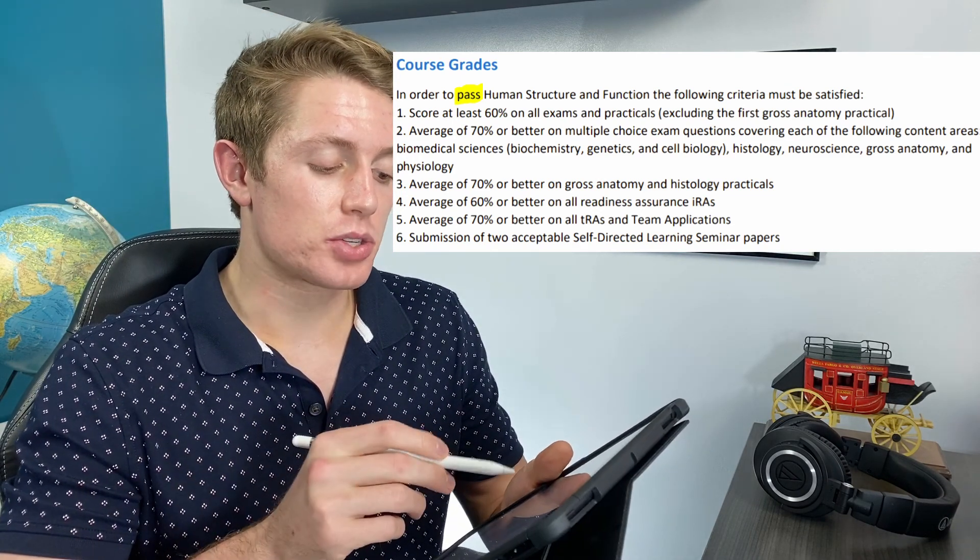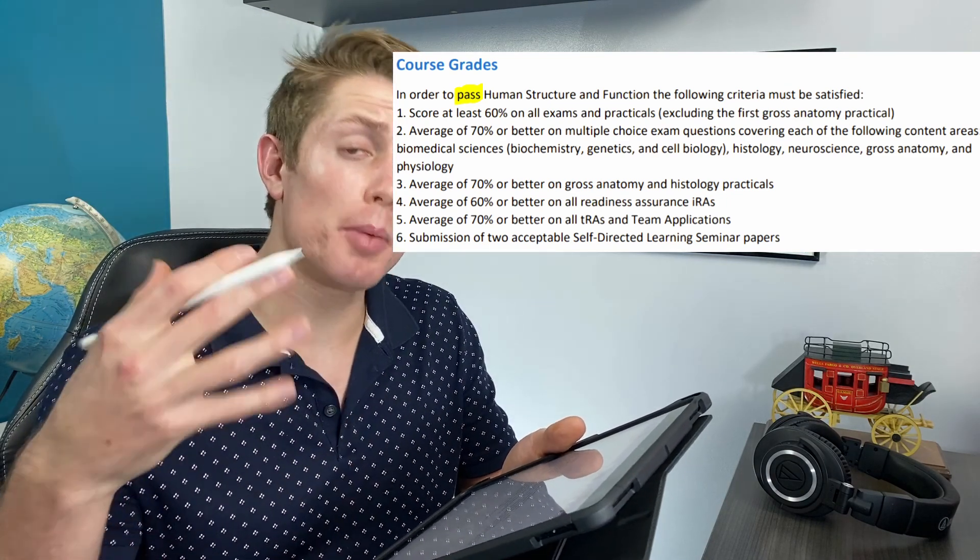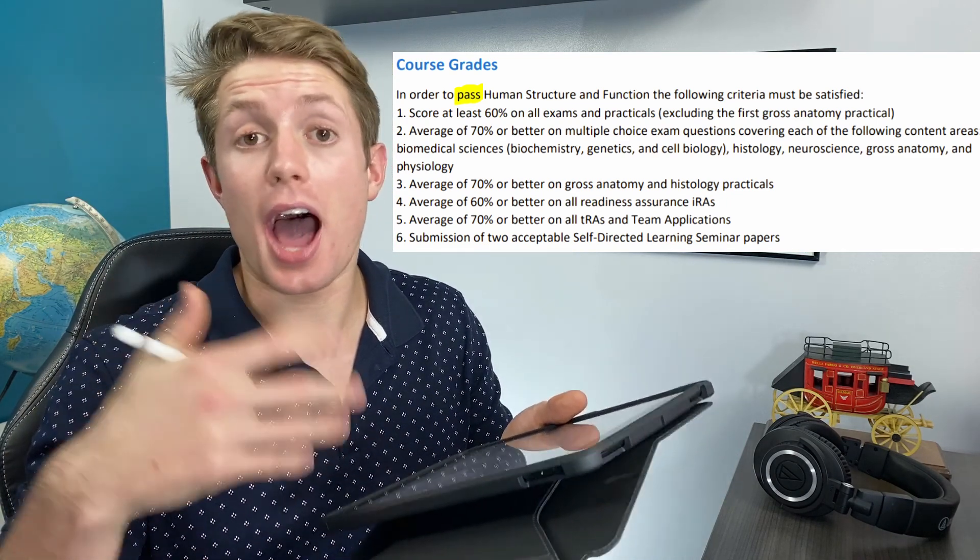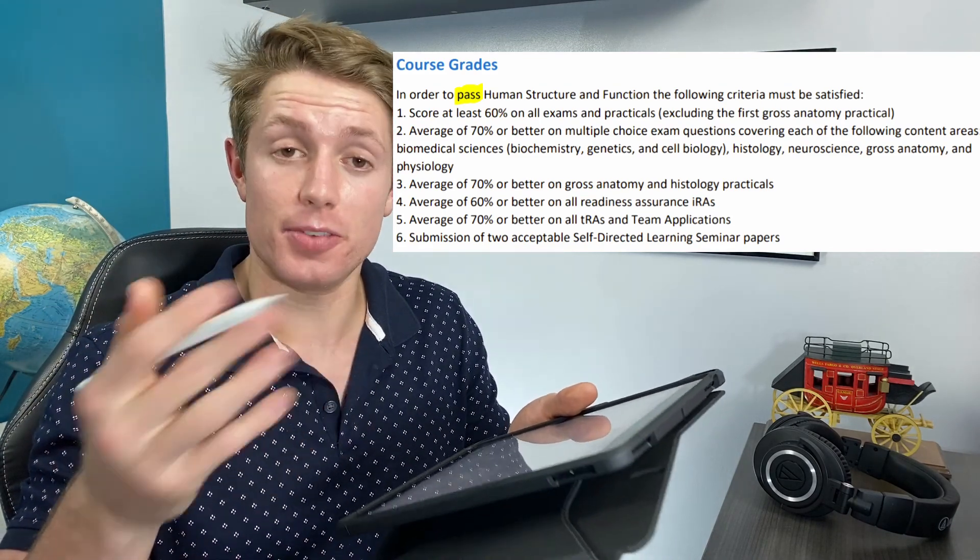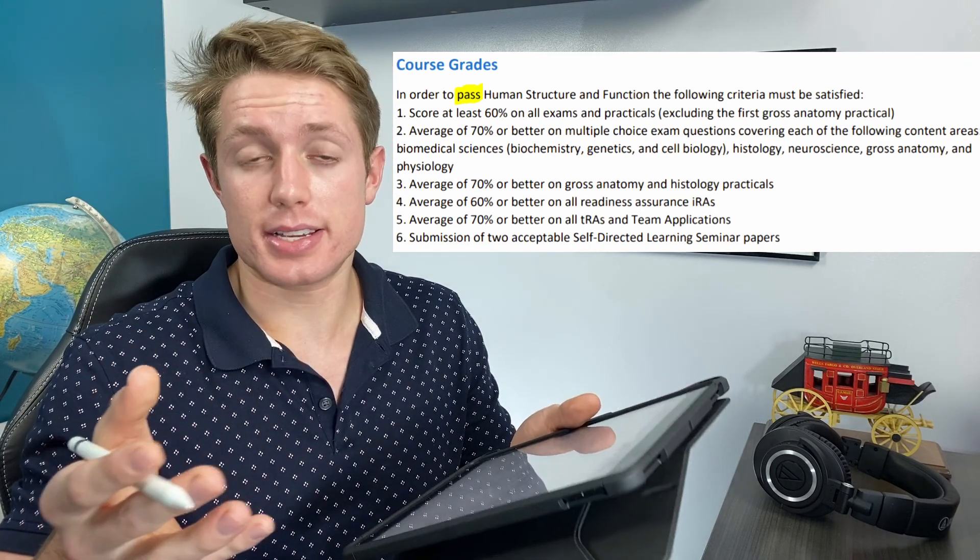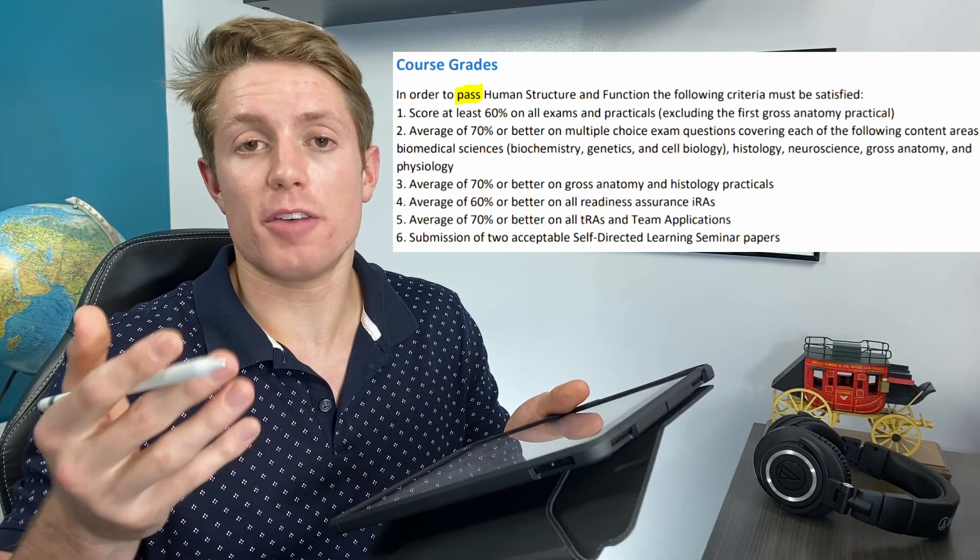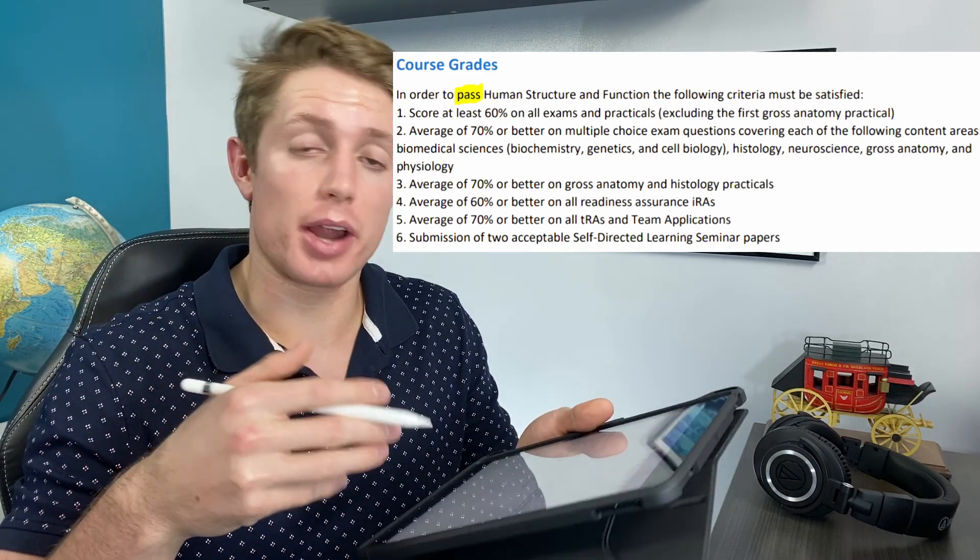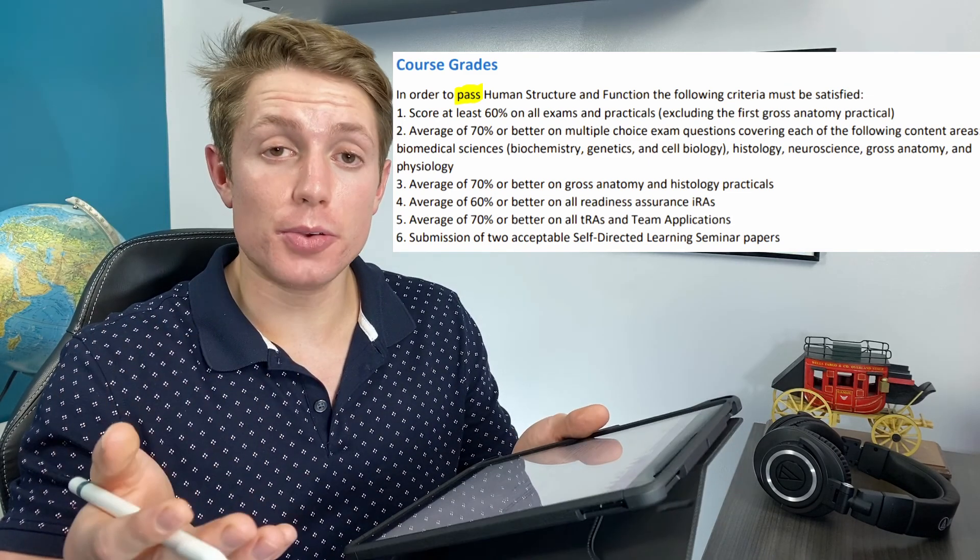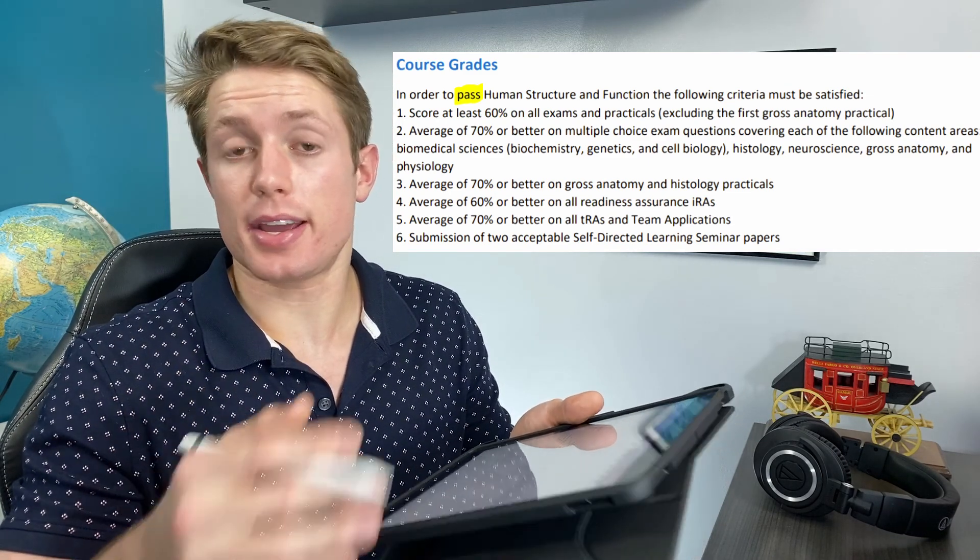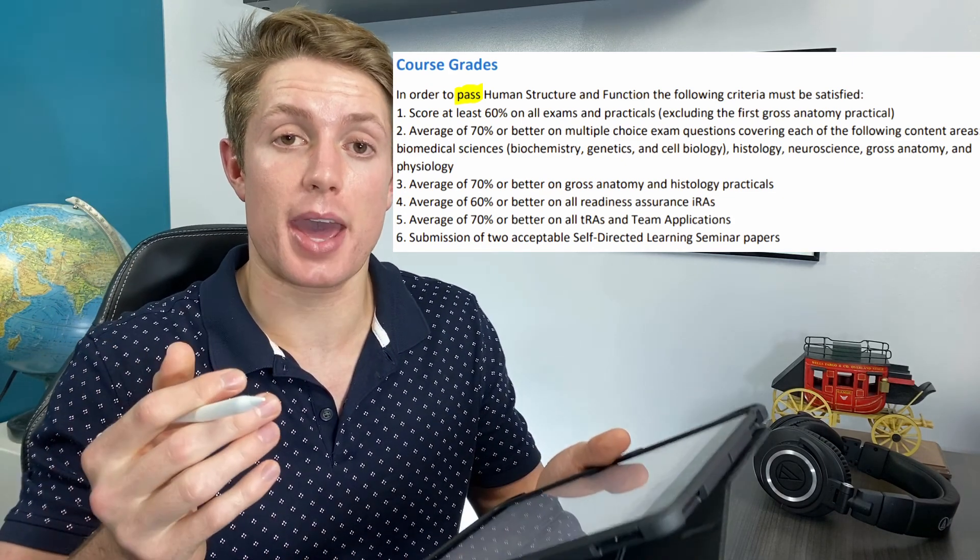So the first requirement is score at least 60% on all exams and practicals. I'll be doing a separate video on how exams work in medical school, so make sure you subscribe and hit notifications if you want to see that in the future. Basically, we get an exam every two weeks on a Monday, unless there's no class on that day, and then we'll have practicals, whether that's an anatomy practical or a histology practical. We've got to get at least 60% on all of those exams. If we do fail it, you do get a chance to retake it. It's not one shot, you're out. They will do everything they can to make sure you eventually pass.